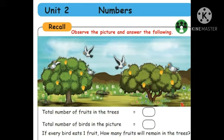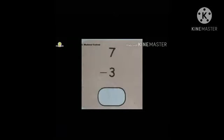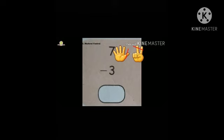Next, there are some exercises on subtraction. Subtraction means take away. You can draw lines beside the number and cross them out. First one — seven minus three. Beside the seven, draw seven lines. Then take out three — cross one, two, three. Remaining how many? Four. Write four in the answer box.